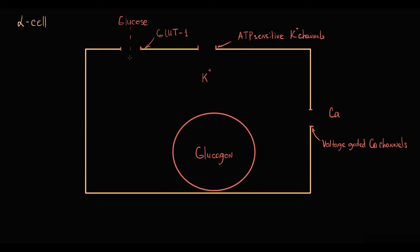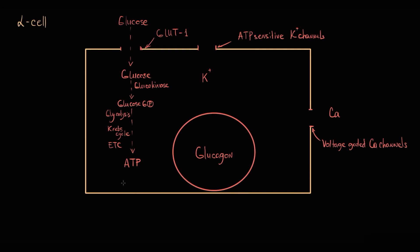When glucose enters through a GLUT1 transporter into the alpha cells, glucose gets phosphorylated by glucokinase and undergoes glycolysis with subsequent degradation in the Krebs cycle and electron transport chain, resulting in the production of ATP molecules.